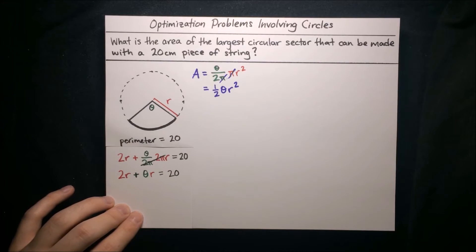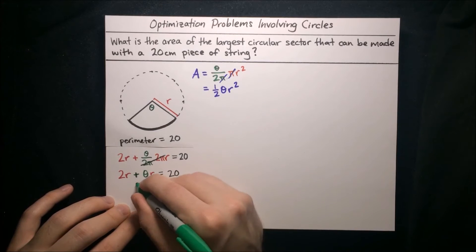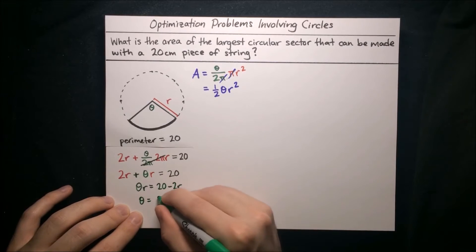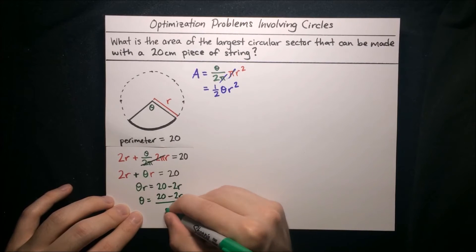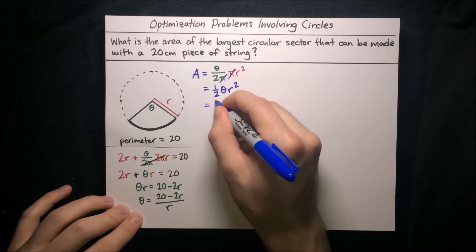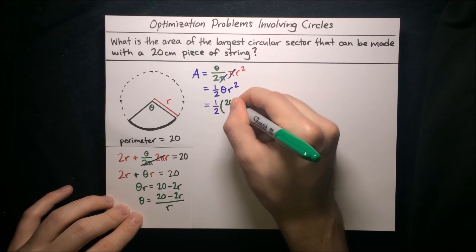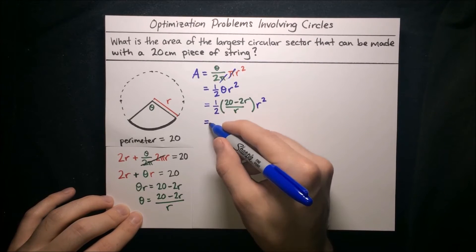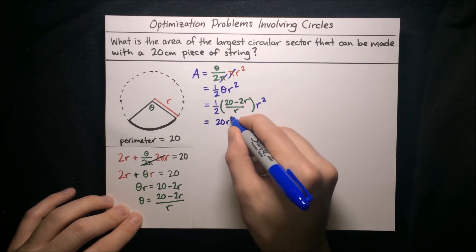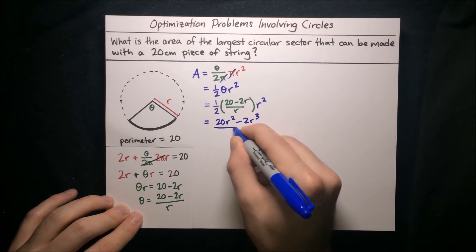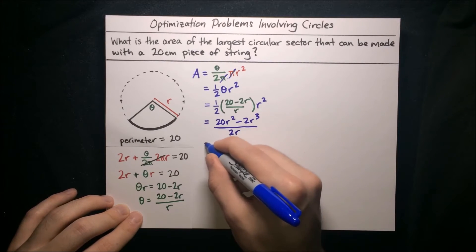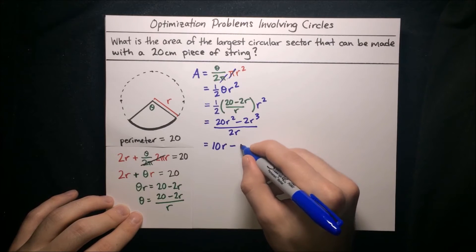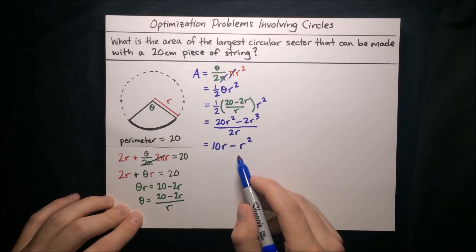Since there's just a single theta in the perimeter equation, we solve for theta: subtracting 2r gives theta r equals 20 minus 2r, so theta equals (20 minus 2r) over r. Substituting back into the area formula: A equals one half times (20 minus 2r)/r times r squared. Simplifying, we get A equals 10r minus r squared.